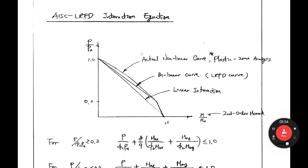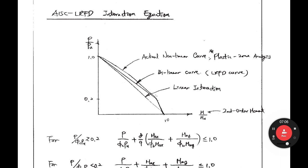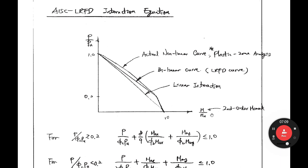The actual nonlinear curve is obtained from exact analysis considering inelasticity — we call it plastic zone analysis. If we assume a linear interaction equation as a straight line, the LRFD code developed a bilinear curve approximation: one linear curve from the top down to the boundary at P/φcPn equals 0.2, and another linear curve below that boundary.